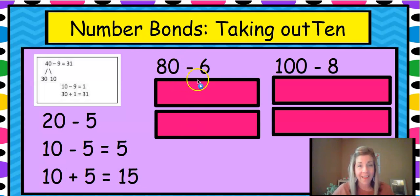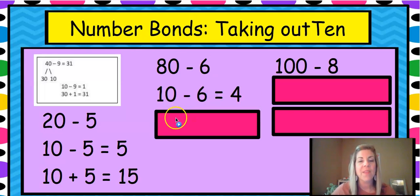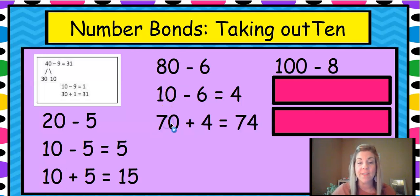Let's do 80 minus 6. First, we're going to take out the 10. 10 minus 6 is 4. Good job. And then after we took out the 10, you can see right here, 8 tens minus 1 ten is going to be 7 tens. Add that 4 back in and you have your answer, 74.